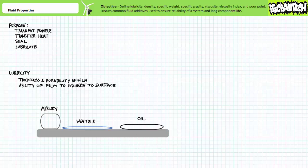Our objective is to define lubricity and discuss important fluid properties, notably density, specific weight, specific gravity, viscosity, viscosity index, and pour point. Additionally, we'll briefly discuss fluid additives. Later lectures will discuss contaminants, filtration, and fluid conditioning.